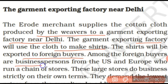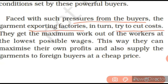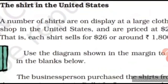The garment exporting factory will use the cloth to make shirts and the shirts will be exported to foreign buyers. Among the foreign buyers are business persons from the US and Europe who run a chain of stores. These large stores do business strictly on their own terms. Faced with such pressure from the buyers, the garment exporting factories in turn try to cut costs — so that cloth can be prepared cheaply with minimum expenditure. They get the maximum work out of the workers at the lowest possible wages. Sometimes labor is available at even lower rates.